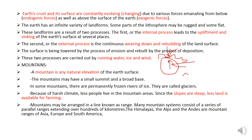The earth has an infinite variety of landforms. Some parts of the lithosphere may be rugged and some flat. These landforms are a result of two processes. The first, or internal process, leads to the upliftment and sinking of the earth's surface at several places.